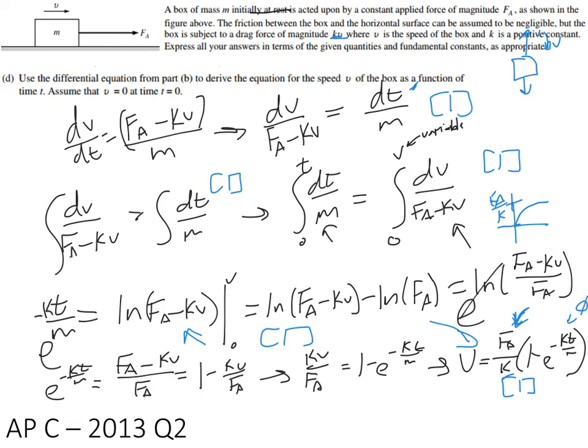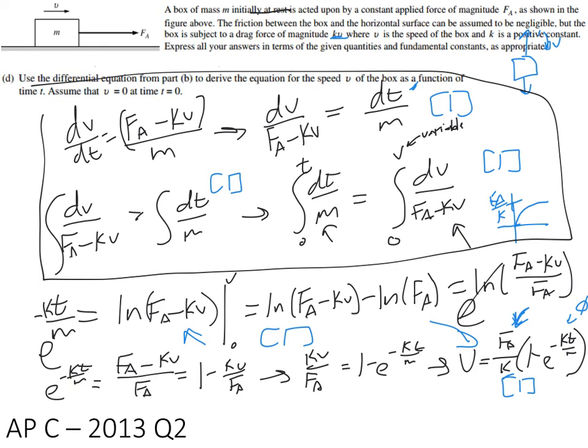Move things around: KV over FA equals 1 minus E to negative KT over M, and you end up coming up with this answer: V equals FA over K times 1 minus E to negative KT over M. And the K is just whatever constant value is in front of the V. So sometimes they actually have like BV, so instead of K it would be replaced with B. You get one point for this and one point for attempting to solve for this. Now the good thing is you should double check to make sure that this makes sense. It should start at zero. If you were to graph this on your calculator, it should start at zero and then reach some terminal speed. And the max speed should be this FA over K.